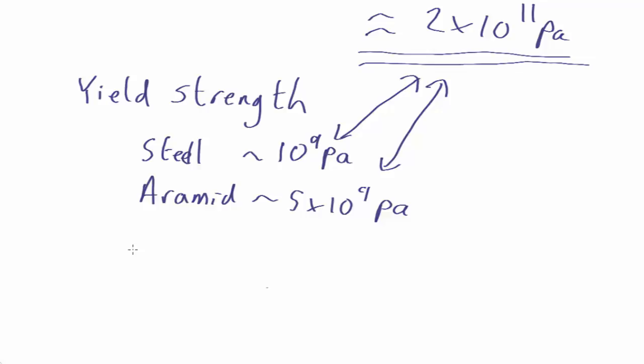Things like carbon nanotubes. They can get up to about 6 by 10 to the 10 Pascals. So they are now getting to within about a factor of 2 or 3 of that.